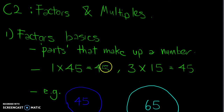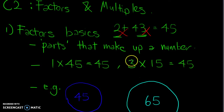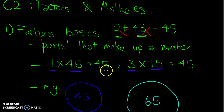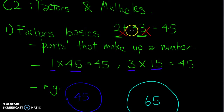If I want to find the factors of 45: 1 and 45 are factors of 45, and 3 multiplied by 15 gives you 45, so 3 and 15 are factors of 45. Factors are parts that, when multiplied with each other, give you a certain number.